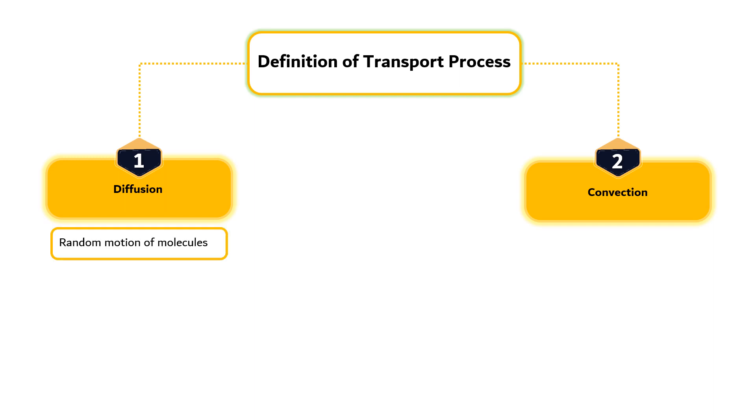Diffusion is the random motion of molecules that arises from thermal energy transferred by molecular collision. Convection is a mechanism of transport resulting from the bulk motion of fluids. The movement of energy and momentum in biological systems is influenced by these two mechanisms.